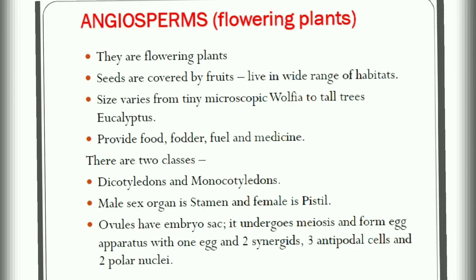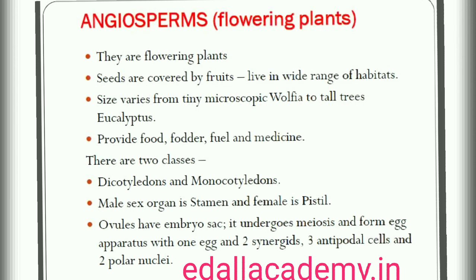Unlike the gymnosperms where the ovules are naked, in the angiosperms or flowering plants, the pollen grains and ovules are developed in specialized structures called flowers. In angiosperms, the seeds are enclosed by fruits. The angiosperms are an exceptionally large group of plants occurring in a wide range of habitats. They range in size from tiny, almost microscopic Wolffia to tall trees of Eucalyptus over 100 metres. They provide us with food, fodder, fuel, medicines and several other commercially important products. They are divided into two classes: the dicotyledons and the monocotyledons (figure 3.5). The dicotyledons are characterized by having two cotyledons in their seeds, while the monocotyledons have only one.